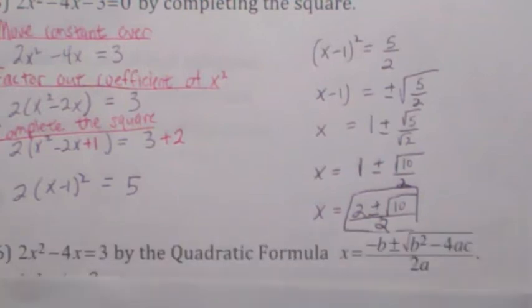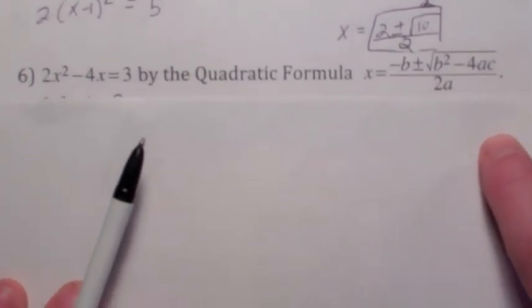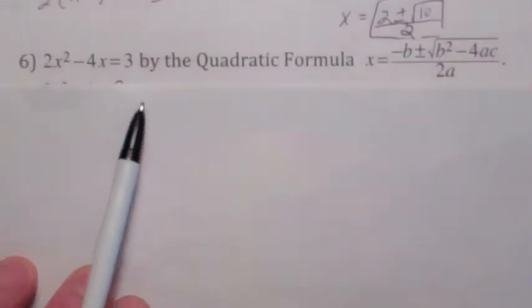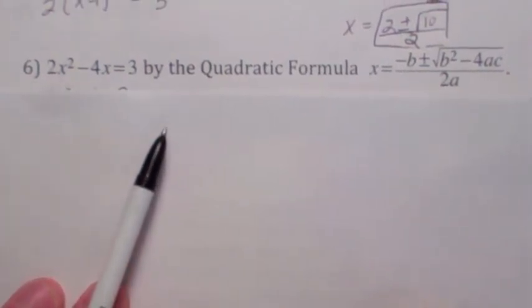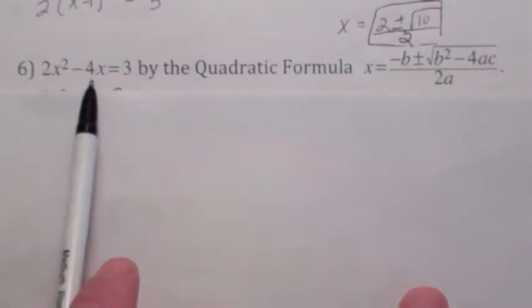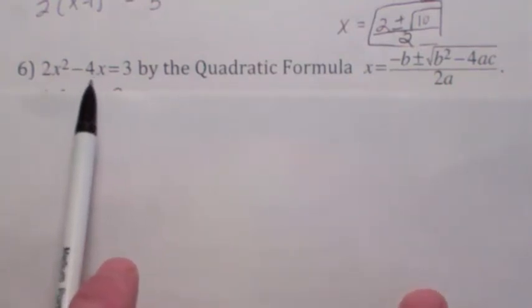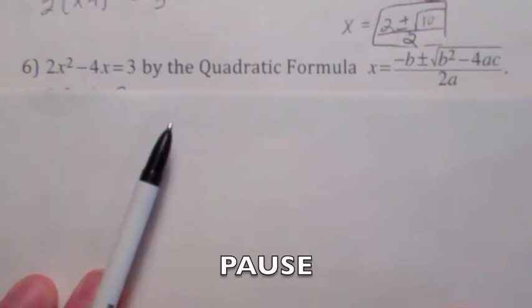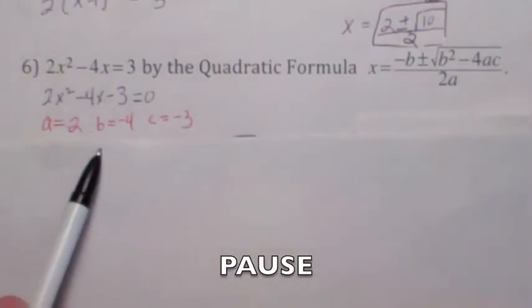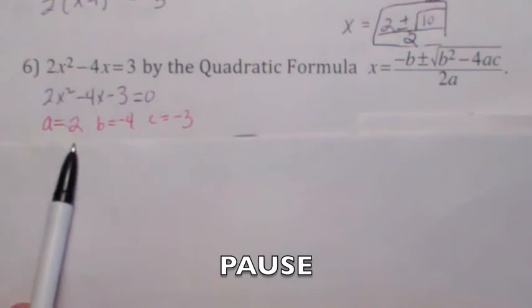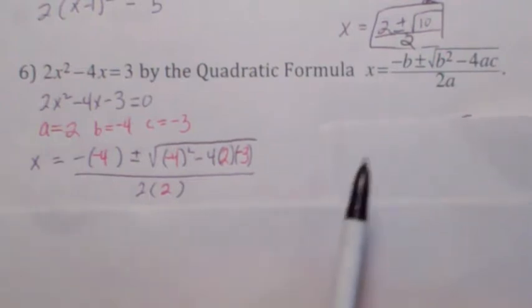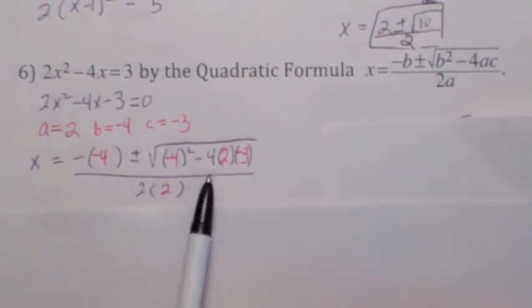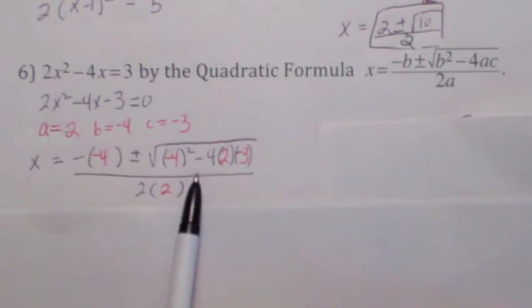Let's try the same problem using the quadratic formula now. The quadratic formula is right here. Please don't call it the quadratic equation — that makes teachers really upset. Call it the quadratic formula. This is a quadratic equation. To use the quadratic formula, you would first get 0 on one side, then identify the coefficients: a is 2, b is negative 4, c is negative 3. Then you gently place them into the quadratic formula — make sure you put them in carefully, and be careful inside the square root. That's where it's easy to make a mistake.